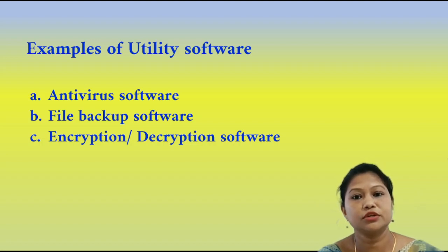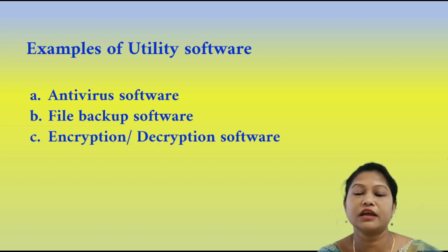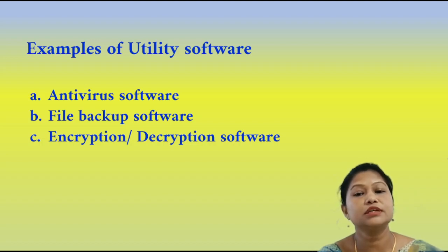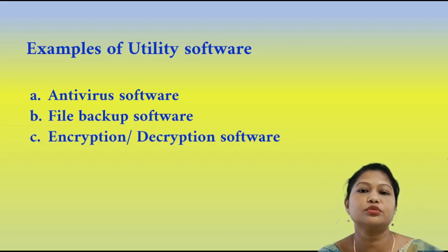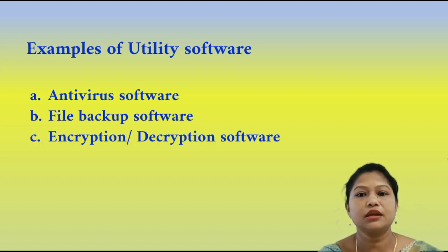Another utility software is file backup software, which keeps our data safe if our system crashes. The third type of utility software is encryption and decryption software, used to protect sensitive data from unauthorized users.